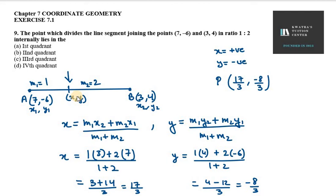When x is positive and y is negative, that's the fourth quadrant. So the correct option is the fourth quadrant. That's the answer for question number 9.